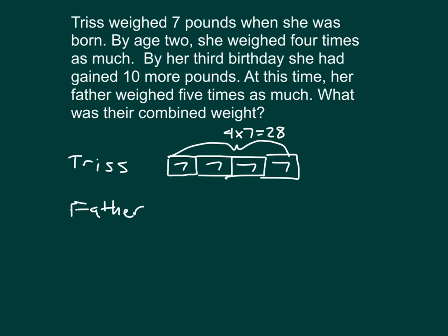Next, it says by her third birthday. So now she's one more year older, but she's gained 10 more pounds. So we have Triss here then: 28 and 10, which is 38. So Triss weighs 38 pounds. I've used all of these things right here so far. Seven pounds born, four times as much by age 2. That's why there's four sevens there. And then third birthday, where she gained 10 more pounds. Four times seven is 28, plus 10 is 38.